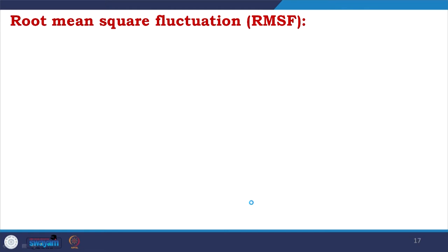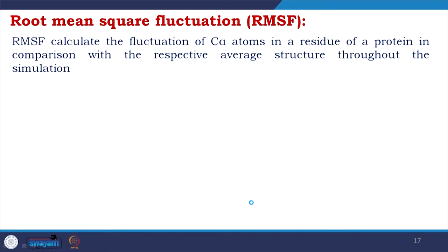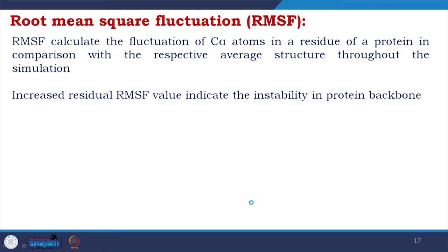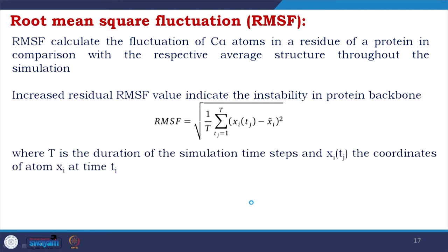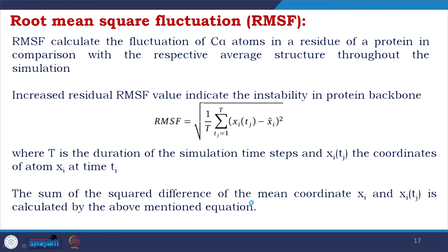Coming to RMSF — root mean square fluctuation. RMSF calculates the fluctuation of C-alpha atoms in a residue of a protein compared to the respective average structure throughout the simulation. Increased residual RMSF value indicates instability in the protein backbone — a high RMSF value means the protein is either not stable or flexible. RMSF = √(1/T × Σⱼ₌₁ᵀ [xᵢ(tⱼ) − x̄ᵢ]²), where T is the duration of simulation time steps and xᵢ(tⱼ) is the coordinate of atom xᵢ at time t.